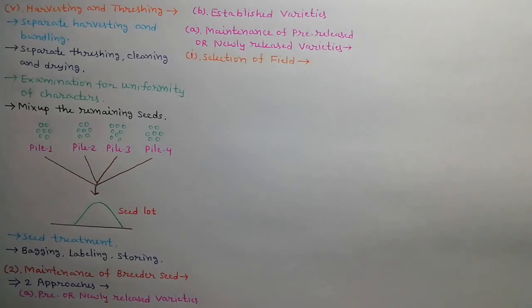First step is selection of field. Breeder seed stock must be grown on clean fertile land where same crop must not be grown in the last year. Second step is isolation. Field must be isolated properly to avoid contamination due to natural crossing and disease spreading.